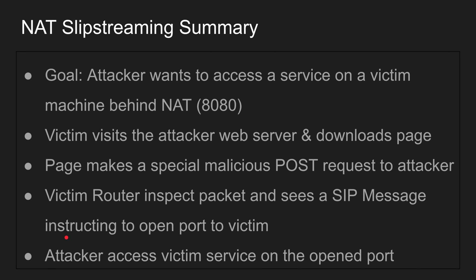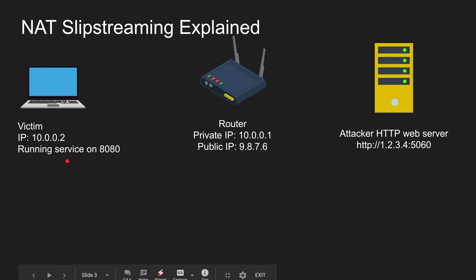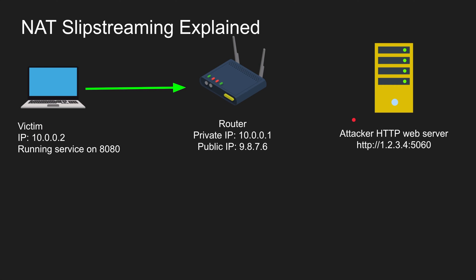Here's the setup: the victim is at IP 10.0.0.2, running a service on port 8080, behind a router at gateway 10.0.0.1 with public IP 9.8.7.6. The attacker's HTTP web server is running on port 5060 — it's critical that it's port 5060, because that's the SIP protocol port. Routers recognize it and activate something called the ALG — the Application Layer Gateway — which handles the port opening.